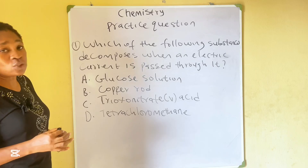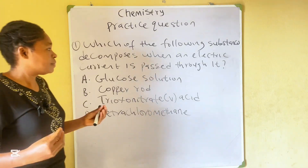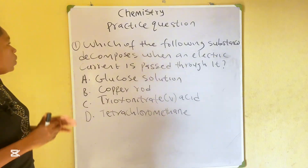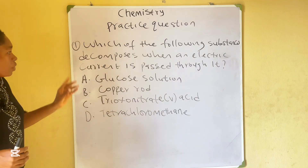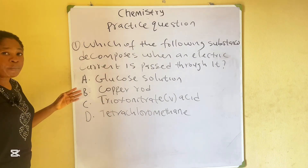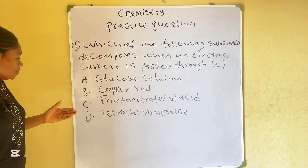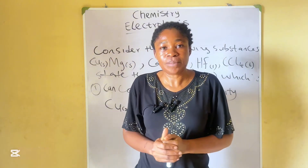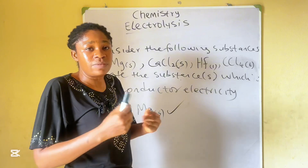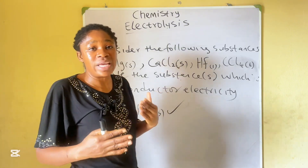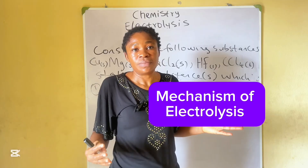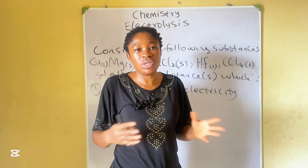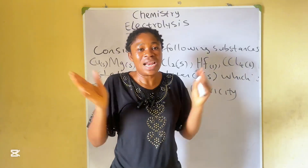Here is a practice question for you to answer — post your answer in the comment section. Which of the following substances decomposes when an electric current is passed through it? A. Glucose solution. B. Copper rods. C. Dilute nitric acid. D. Tetrachloromethane. You have come to the end of today's lesson — this is just part one, introduction to electrolysis. In the next video, I'll talk about ionic theory and the mechanism behind it, followed by examples of electrolysis and calculations. Thanks for watching and have a great day!